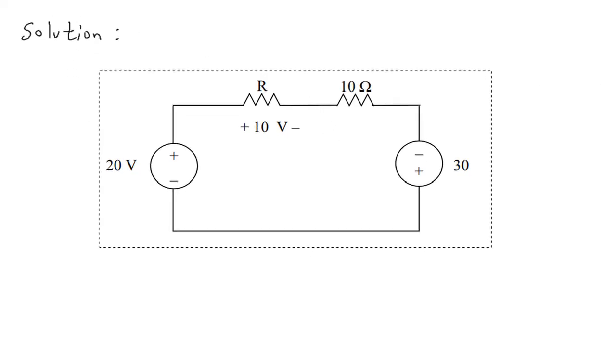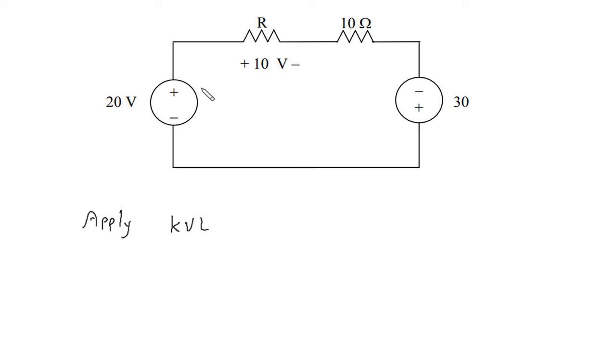Then we will apply KVL. According to KVL, let us say current flows in this direction. This is I.